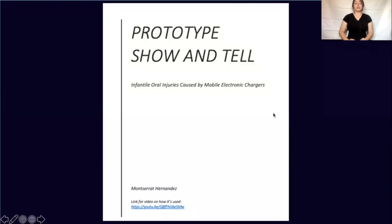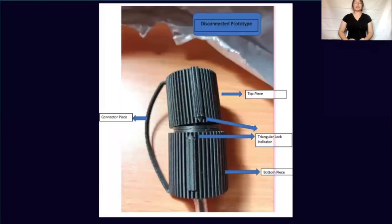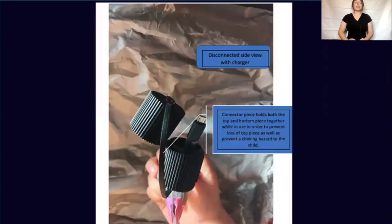Next, we have the prototype show and tell, where I will present a slideshow demonstrating each component of my prototype. Here we have a disconnected prototype showing the top piece, connector piece, and bottom piece, alongside a description of where the triangle locks are indicated. Going forward, we have a disconnected side view with the charger, showing how the connector piece fully holds the bottom piece and top piece together, ensuring that neither piece gets lost.